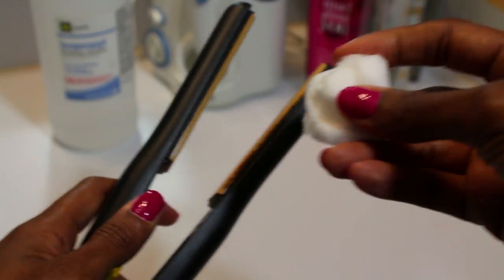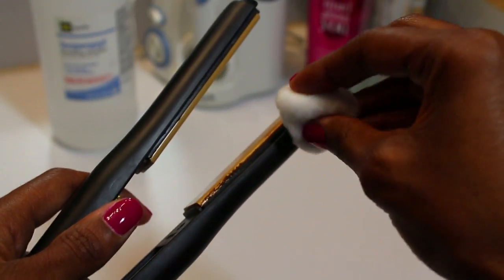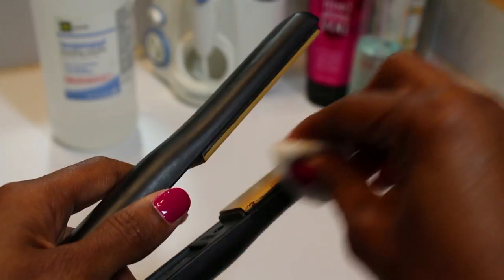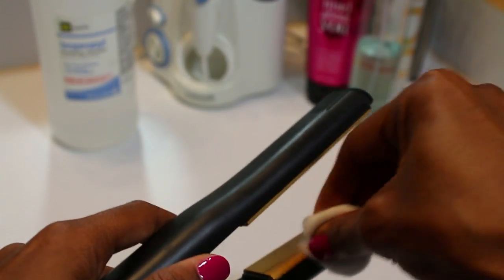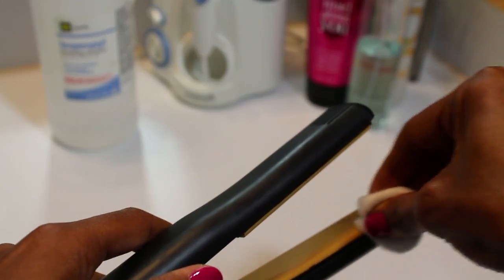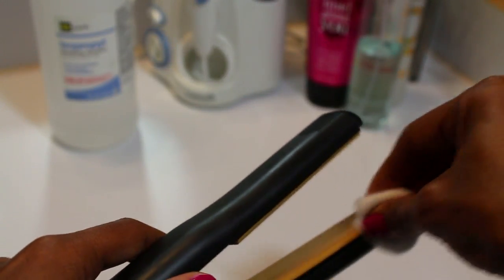You're going to take your cotton ball and begin to rub that all over the area that has the damage—or not really the damage, but just the leftover residue from your heat protectants and hairsprays, whatever you use when you flat iron your hair.